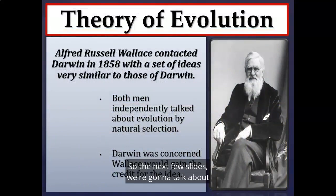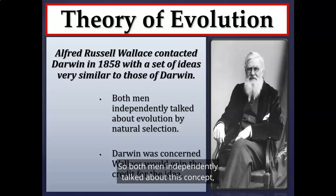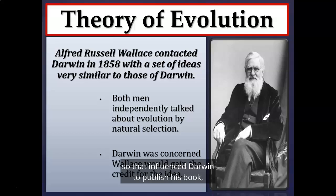The next few slides discuss disciplines that influenced Darwin. Alfred Russell Wallace contacted Darwin in 1858 with ideas very similar to Darwin's — both men independently developed the theory of evolution via natural selection. Darwin was concerned that Wallace might gain credit for the idea, which influenced Darwin to publish his book On the Origin of Species.